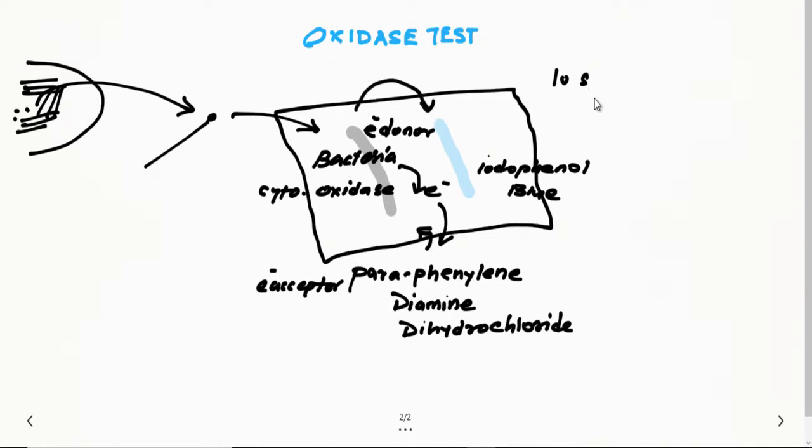Within 10 seconds, you will observe the color change from colorless to blue, and that is your oxidase test positive. If it remains colorless, that means it is a negative test. If it becomes blue in color, it is positive oxidase test.